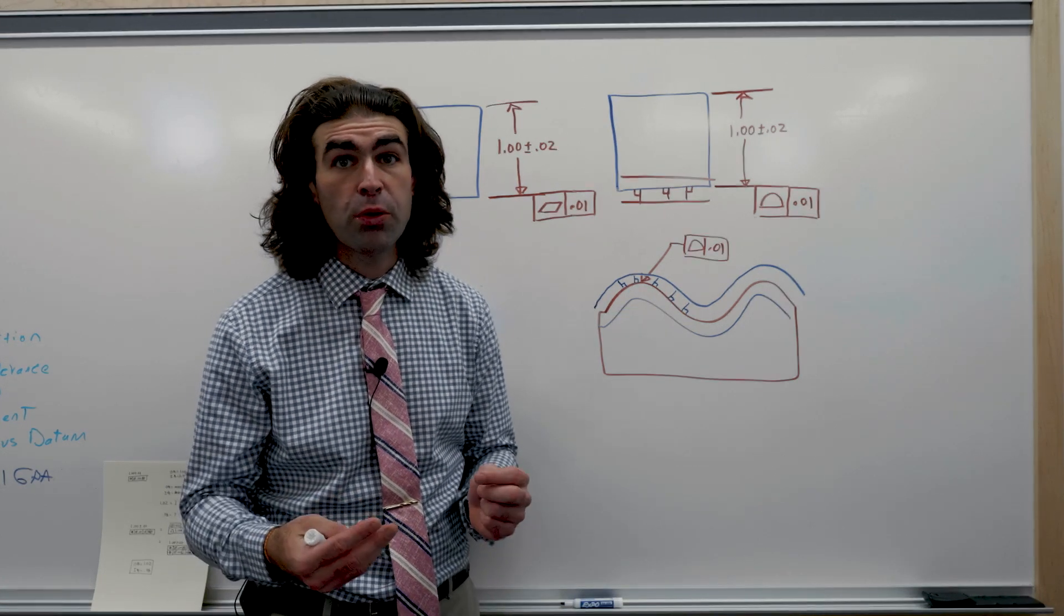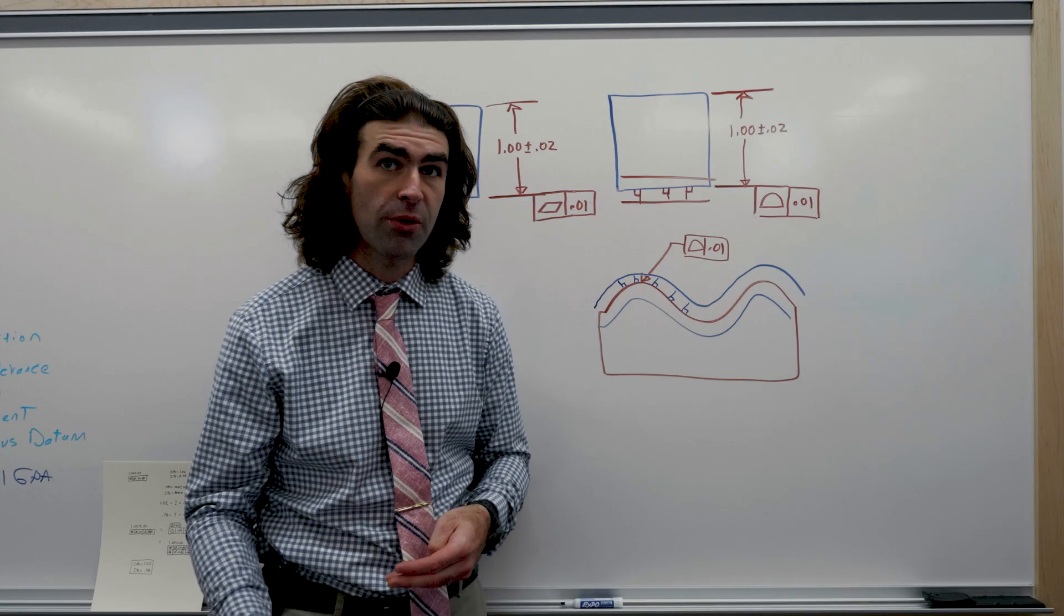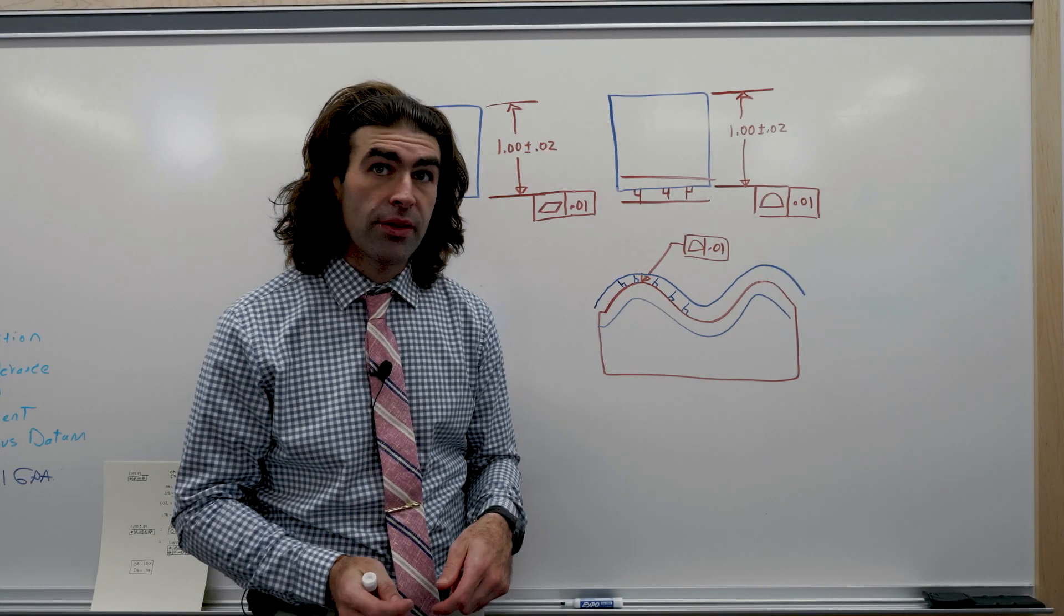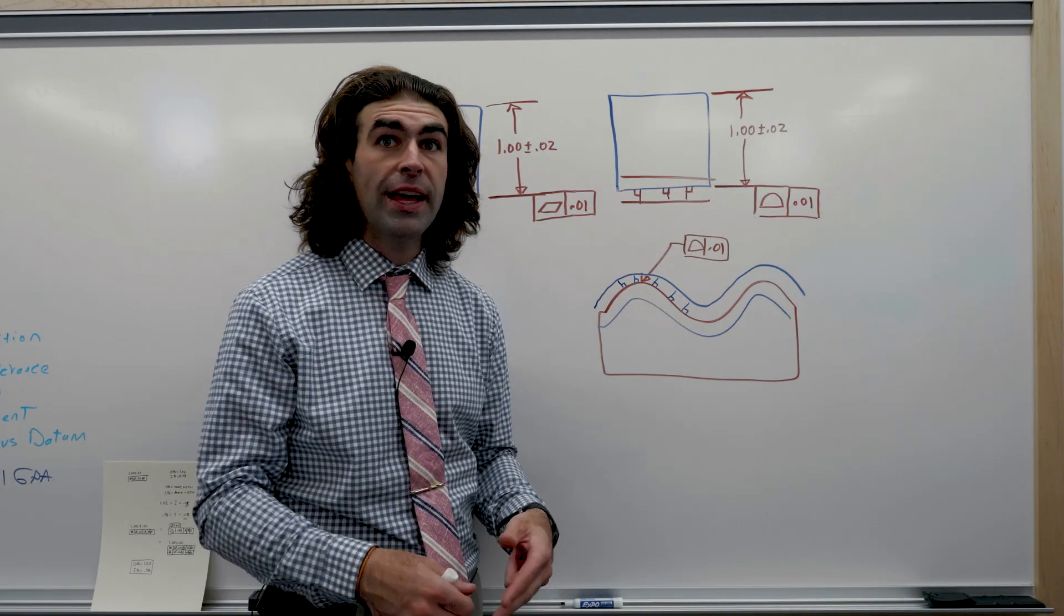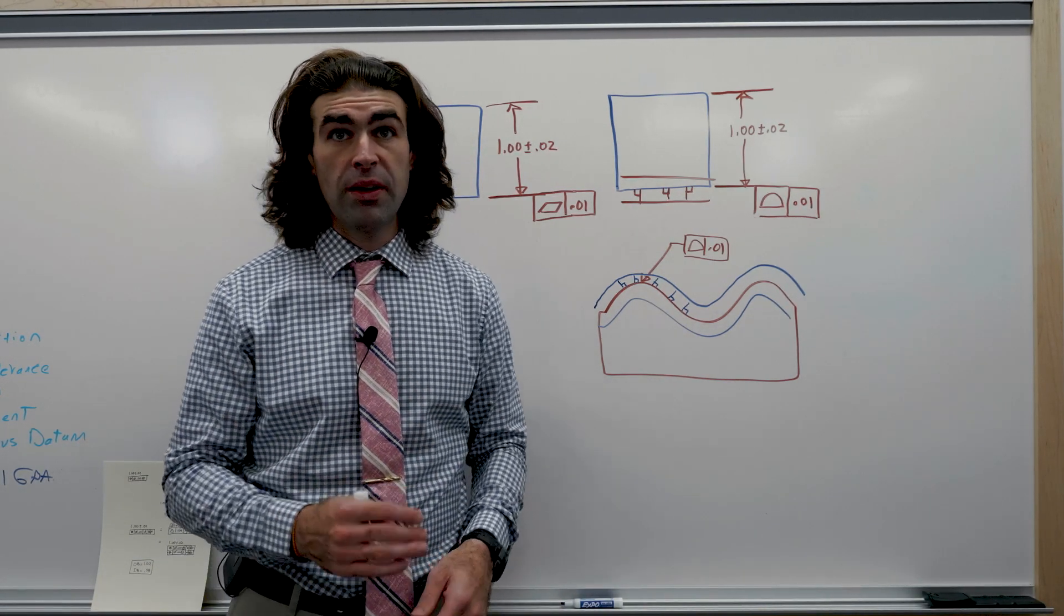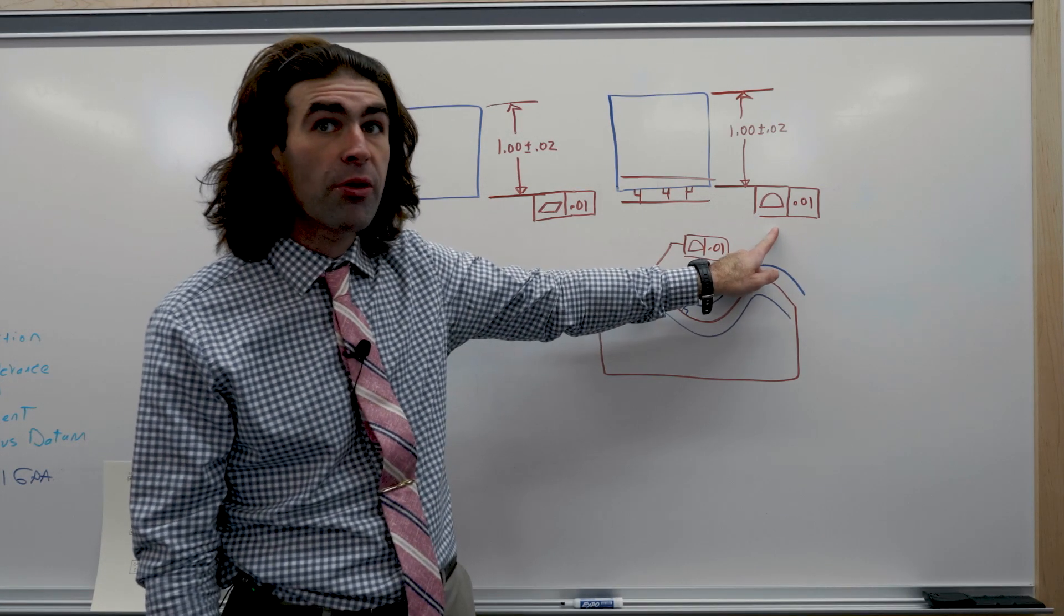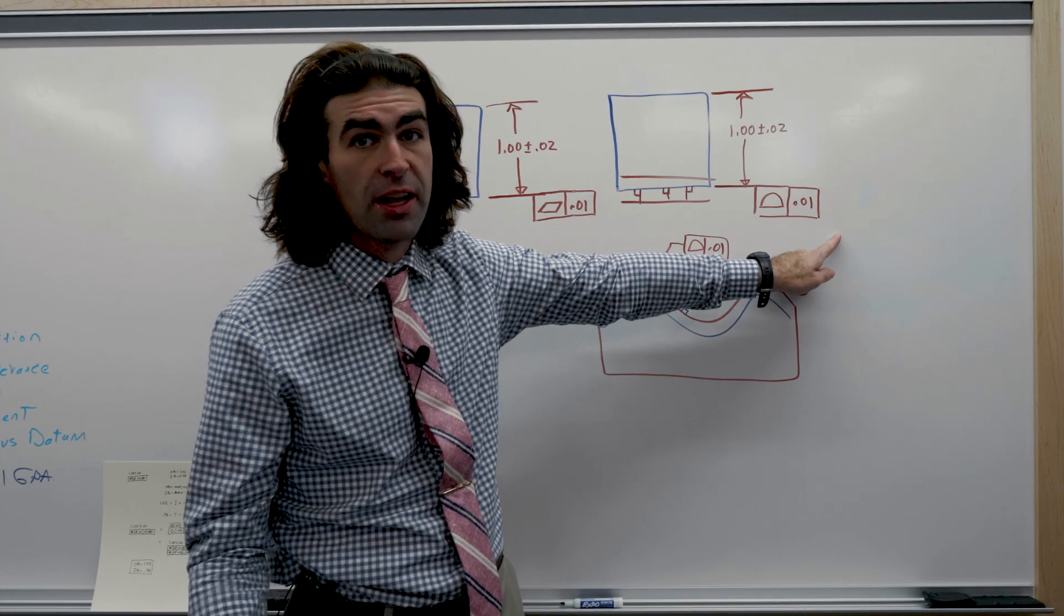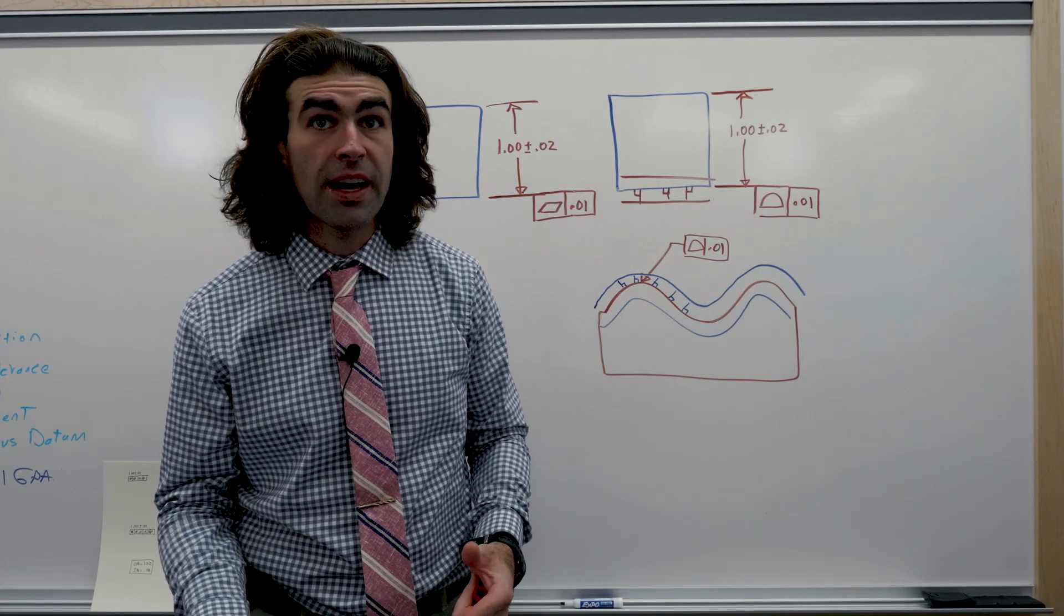So why don't we just use profile for everything so we don't have to waste ink on different symbols? Well, there's a couple of reasons. The first is just readability. It's just when you see the flatness symbol, you know it's flatness. You don't have to think about it. When you see a profile, you've got to look to see if there's datum references. Now I know it just takes a half a second but it's something you got to think about.